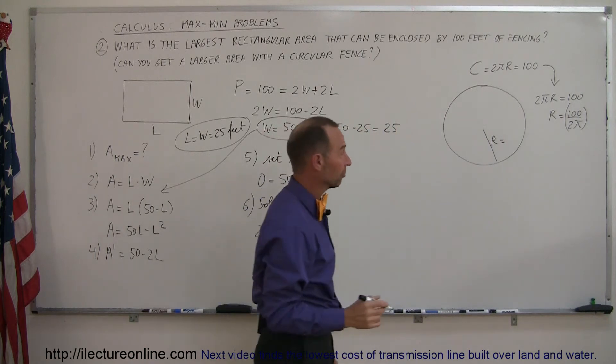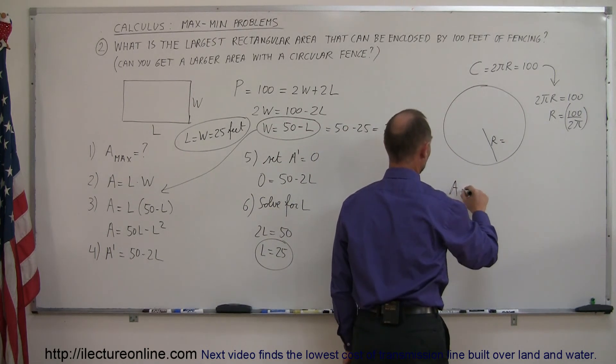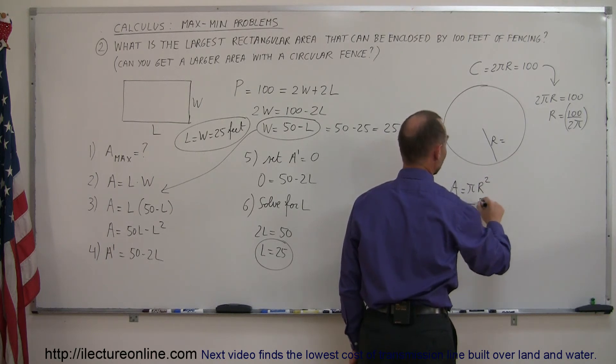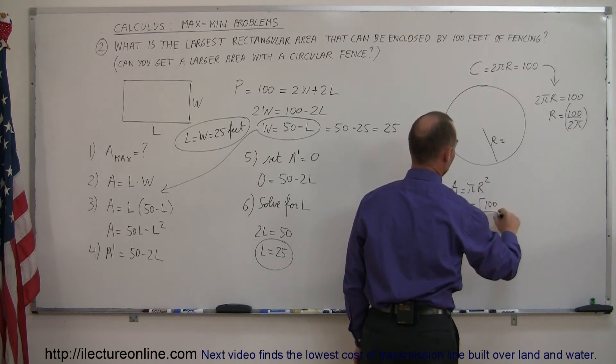And the area, for a circle, area is equal to pi r squared.